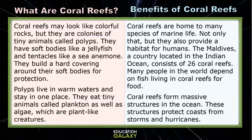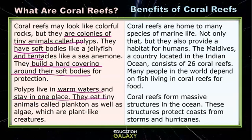In 'What Are Coral Reefs?' we have that they are colonies of tiny animals called polyps. They have soft bodies and tentacles. They build a hard covering around their soft bodies. They live in warm waters and stay in one place. They eat tiny animals called plankton and algae.